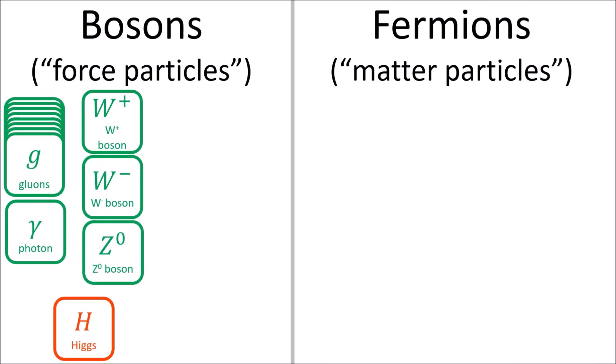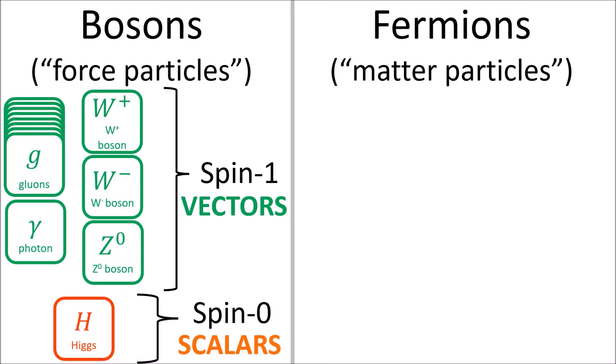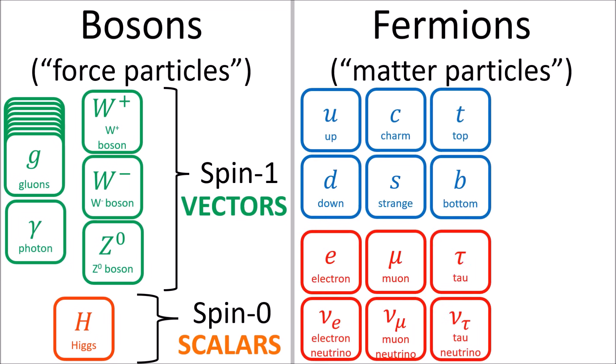All known fundamental bosons have either spin 1, which are represented by vectors, or have spin 0, which are represented by scalars. Vectors and scalars are familiar mathematical objects to any undergraduate physics student. However, all known fundamental fermions have spin 1/2, and these are represented by spinors.